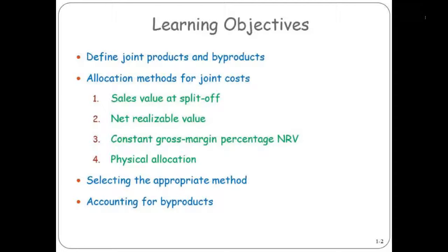Those methods are: sales value at split off, net realizable value. We're not going to really focus on constant gross margin percent of net realizable value. And then we'll talk about physical allocation.